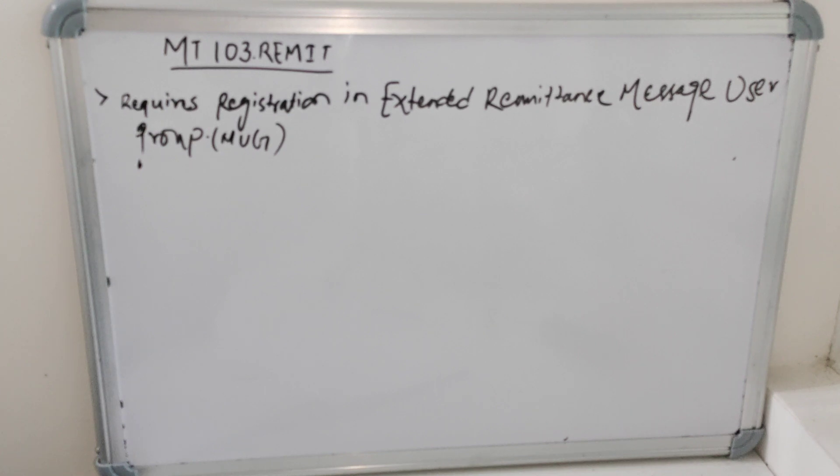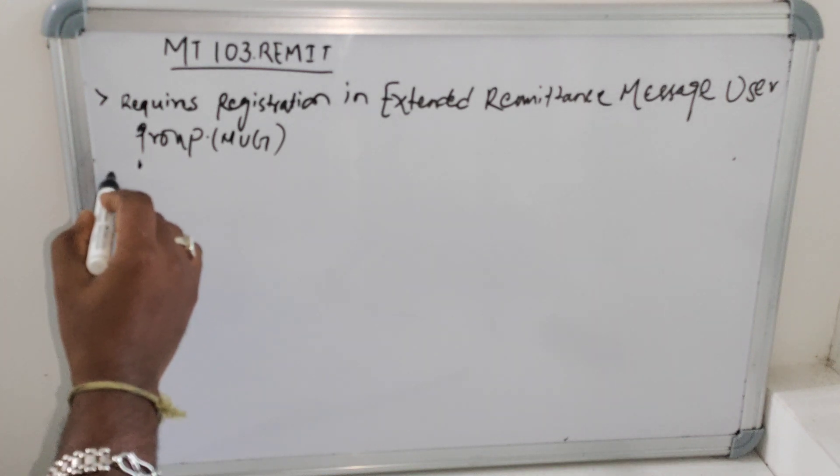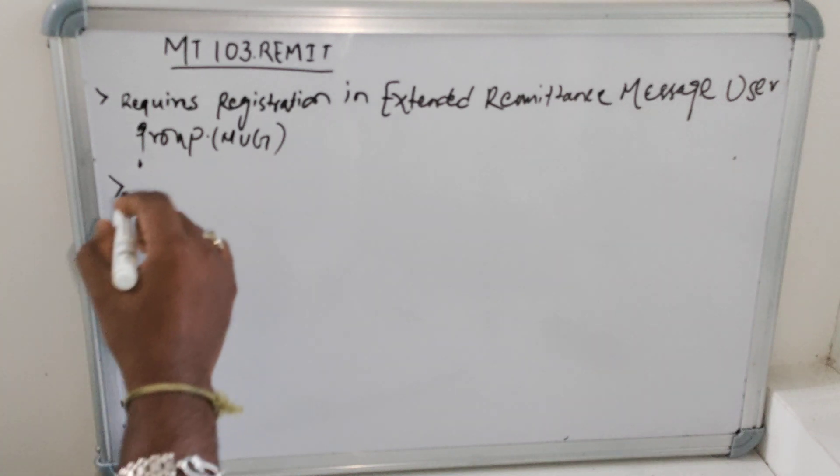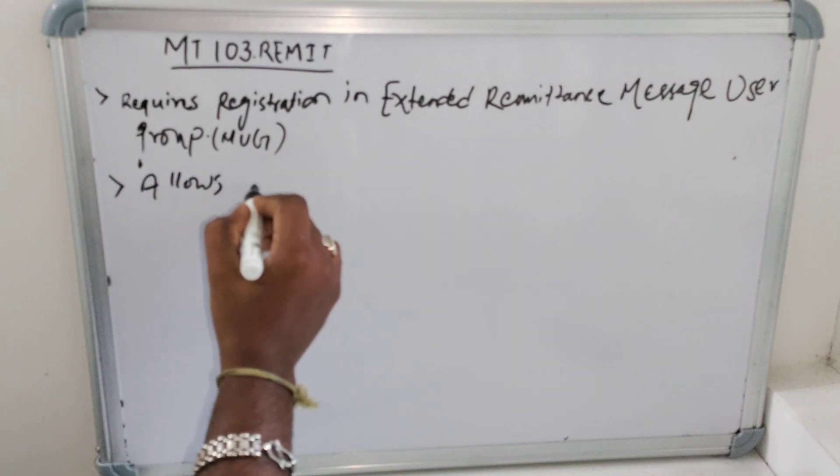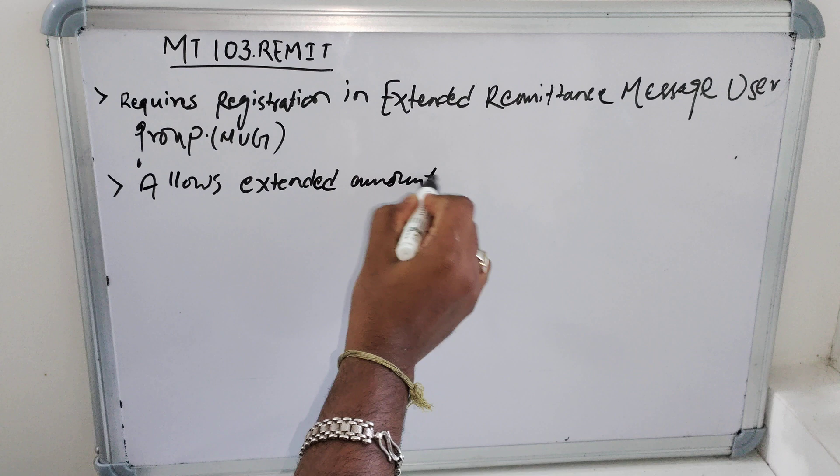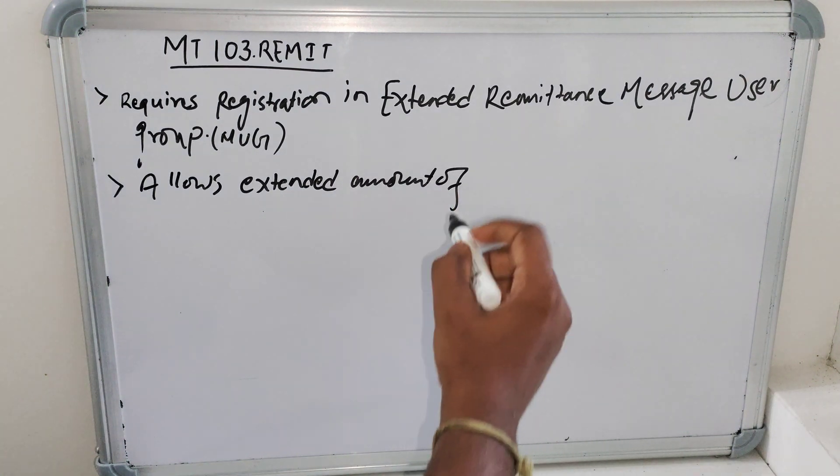This message user group, extended remittance message user group, is basically a closed user group where only the banks which are registered can send as well as receive MT 103 remit messages in order to process successfully. Another aspect of this MT 103 remit message is it allows its subscribers to exchange message MT 103 with an extended amount of remittance information in field 77T.